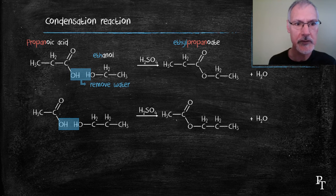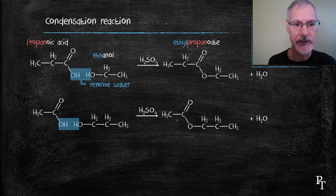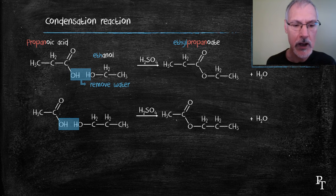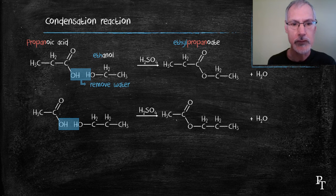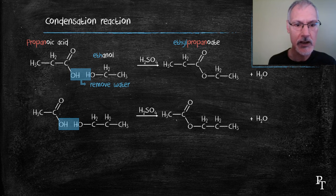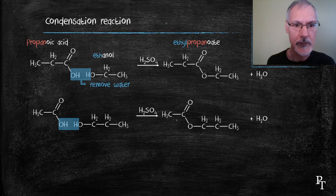And then the alcohol group forms the prefix, I should say the suffix, ethyl. So this molecule would be called ethyl propanoate. Again, the ethyl comes from the alcohol and the propa comes from the acid.